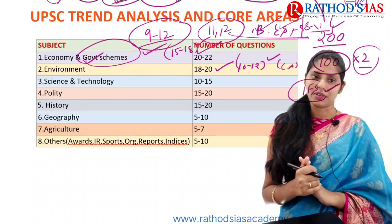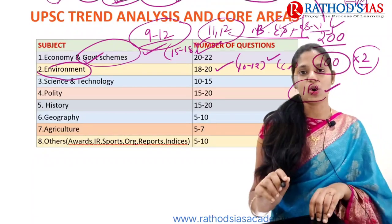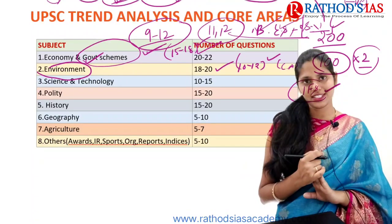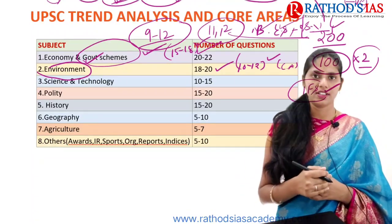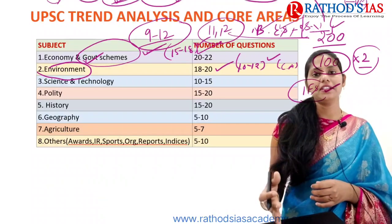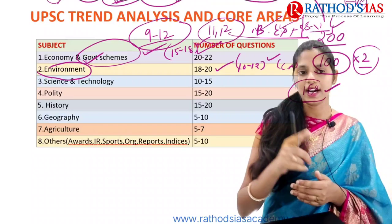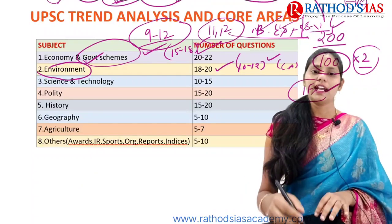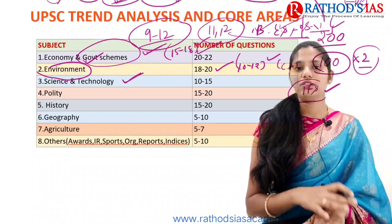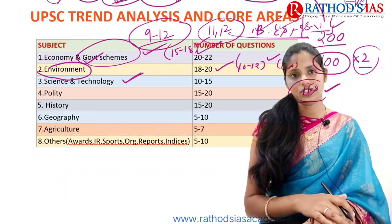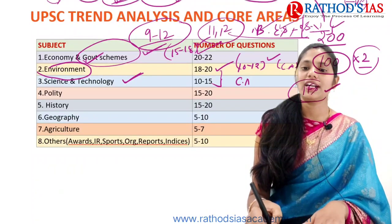From Environment, about 10 to 12 questions for sure will come from your basic static portion, which you can cover from Shankar IAS's book or from your NCERT — especially the 12th class NCERT which has 4 chapters on Environment. From Science and Technology you will also be getting 10 to 15 questions, and most of those will come from current affairs.